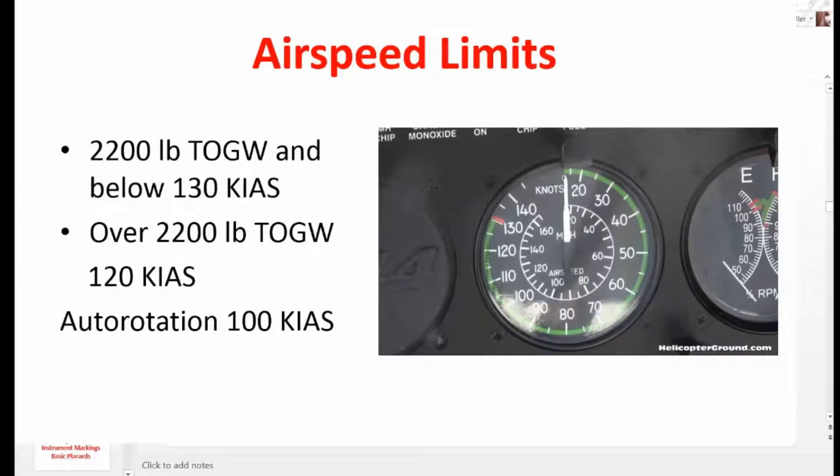Airspeed limits. At 2,200 pounds take off gross weight and below, 130 knots indicated airspeed is your limit. Over 2,200 pounds take off gross weight, it's 120 knots indicated airspeed. And your airspeed limit for rotation is 100 knots indicated airspeed.